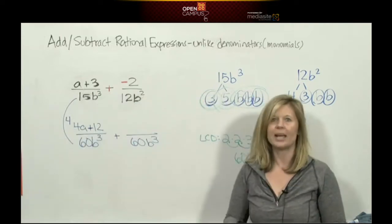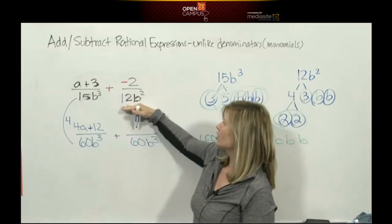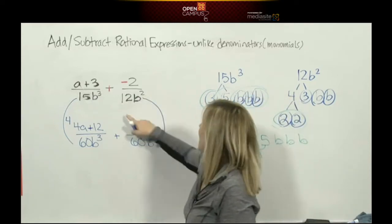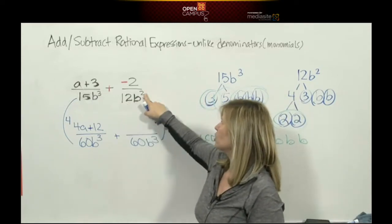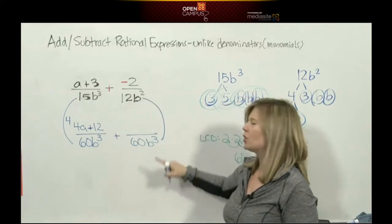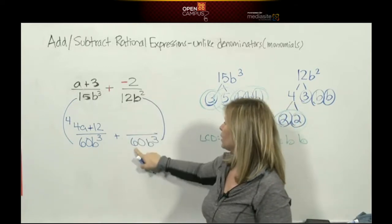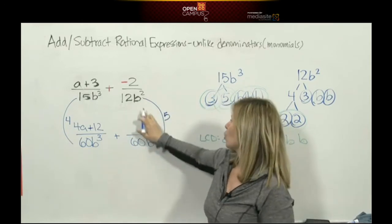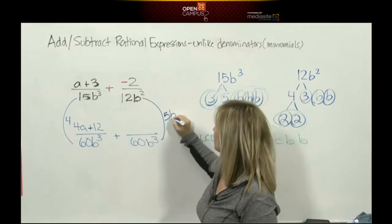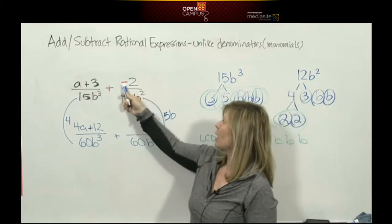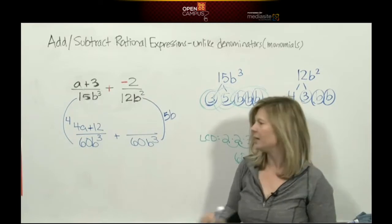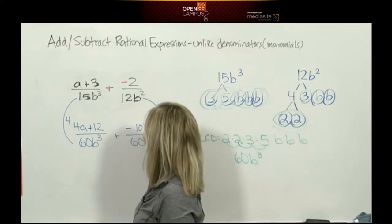Let's go over here. Same difference. If you change the denominator, you have to change the numerator. What do we multiply to 12b squared to make 60b cubed? Well 12 becomes 60 by multiplying by 5. b squared becomes b cubed by multiplying by b. So now we take our numerator negative 2 and multiply it by 5b, and we get negative 10b.